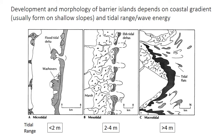The development of barrier islands is really a function of the coastal gradient. They tend to form when the coastal continental shelf is quite shallow or shallowly sloping, which is likely why they're not very common in California. Their morphology — particularly the spacing and size of the tidal inlets and the continuity of the islands — varies with the tidal range. Microtidal coastlines have a tidal range less than two meters, macrotidal coastlines have a tidal range greater than four meters, and mesotidal coastlines are intermediate, with a two to four meter tidal range.